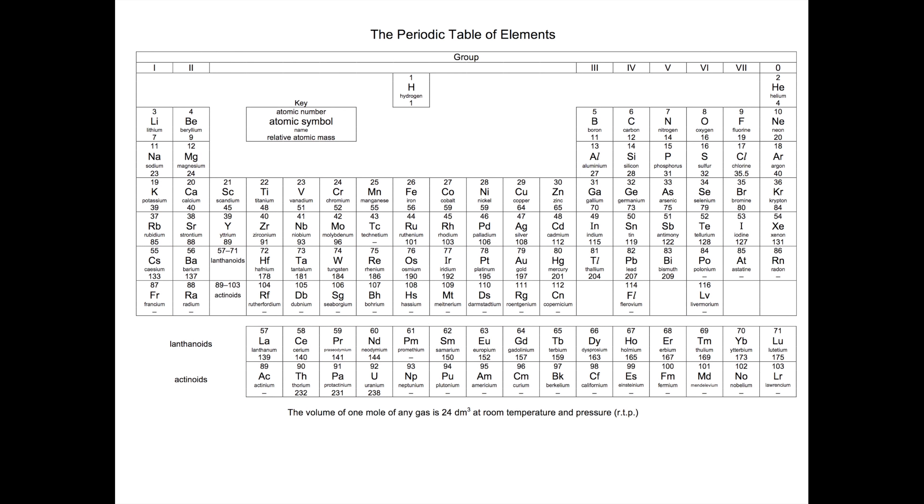The noble gases are found in group zero of the periodic table. Apart from helium, which has two valence electrons, the other noble gases have eight valence electrons.